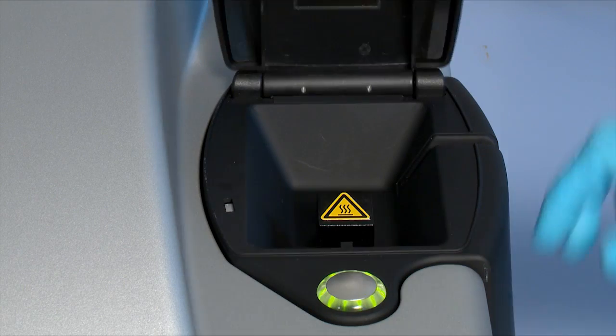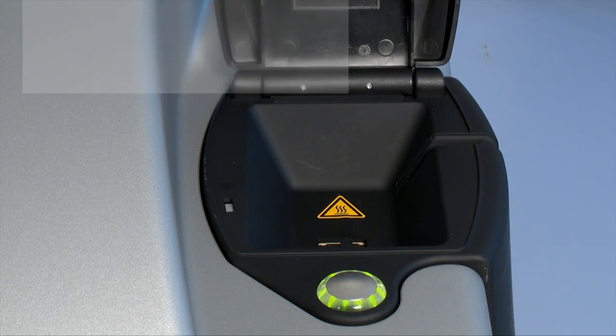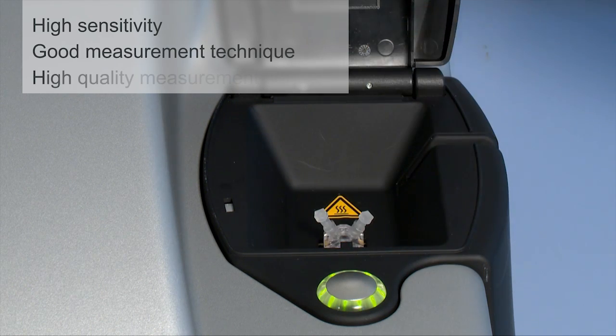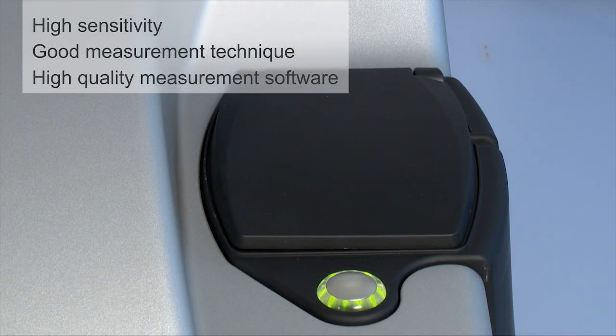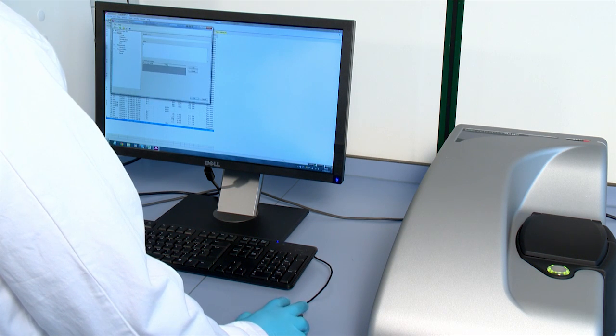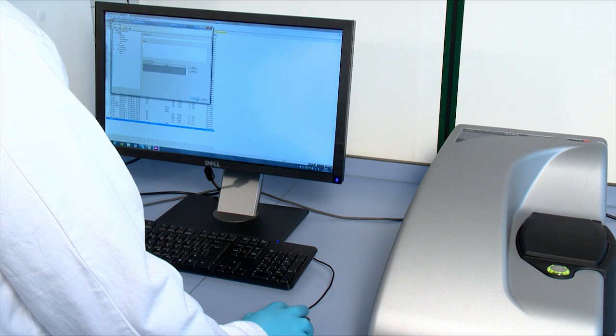An ideal measurement of protein mobility relies on three things: high sensitivity, good measurement technique, and high quality measurement software and analysis. The Zetacizer Nano ZSP and software incorporate all of these to maximize the quality of protein mobility measurements.